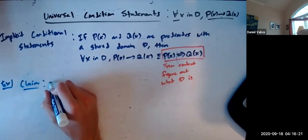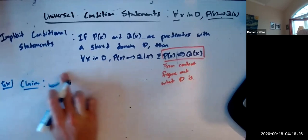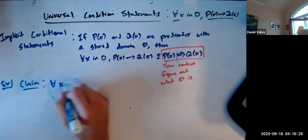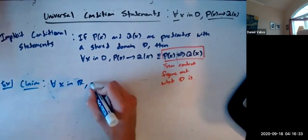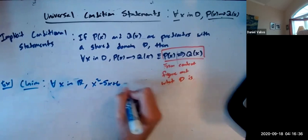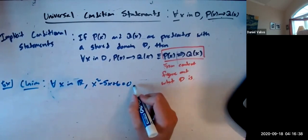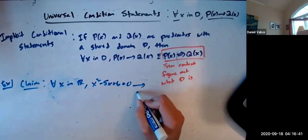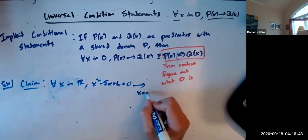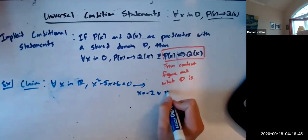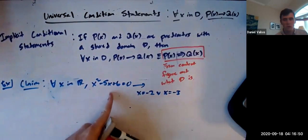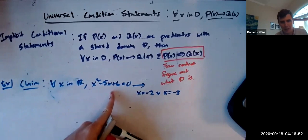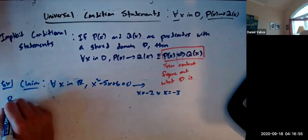For all x in the real numbers, x squared minus 5x plus 6 equals 0 implies that x equals minus 2 or x equals minus 3. And you guys have totally done this before. You've had this factoring problem probably a thousand times.